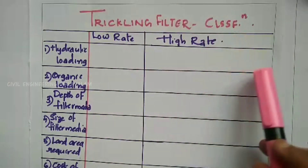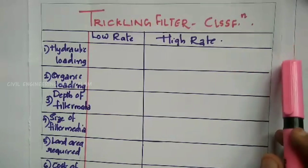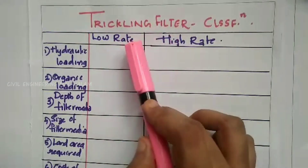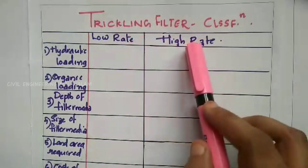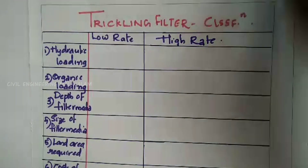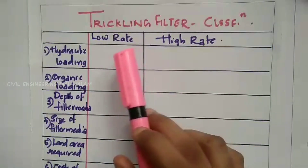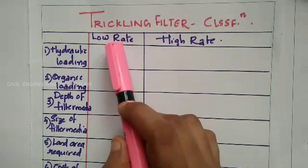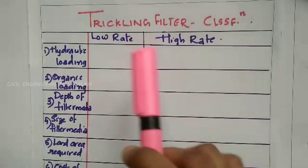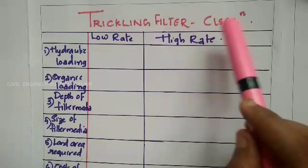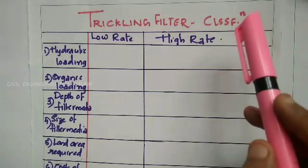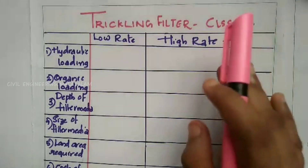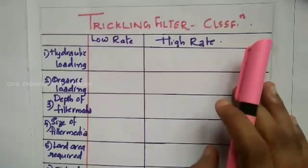What is trickling filter classification? Generally, trickling filters are two types: low rate trickling filter and high rate trickling filter. This is the main classification. Low rate is the standard trickling filter. High rate is the percolating or sprinkling trickling filter.